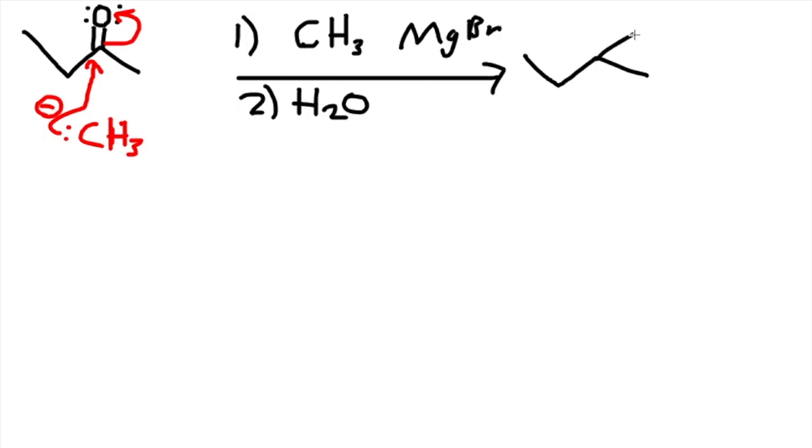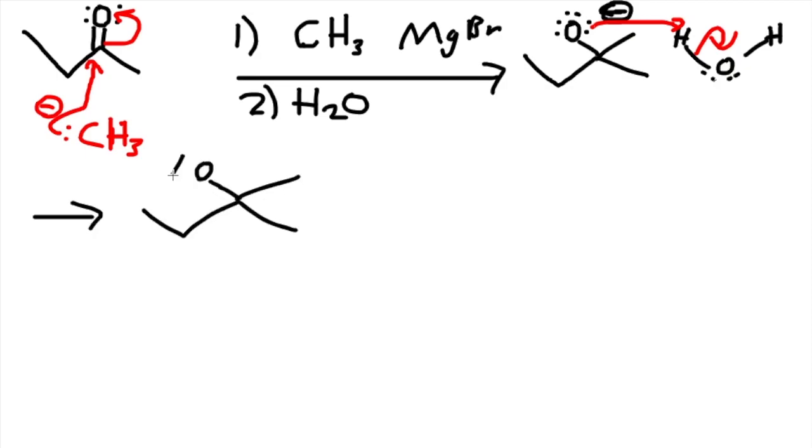Now we have oxygen with a negative charge, and also that carbon is added there. Oxygen with a negative charge. Water comes in, in this case, to deprotonate that oxygen. And so it adds OH to it. So the mechanism is very simple. And that is it for this mechanism, for this problem.